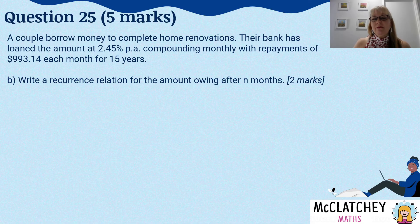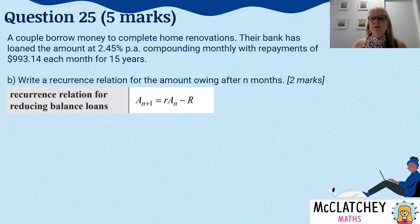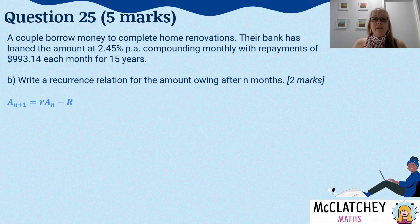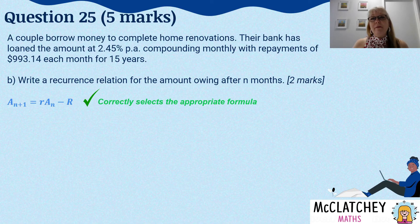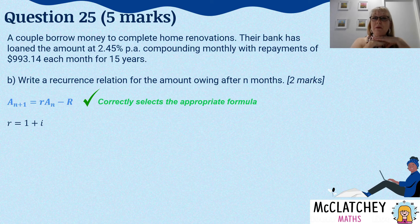Part B asks us to write a recurrence relation for the amount owing after N months. We pull the recurrence relation for a reducing balance loan off our formula sheet and write that down — that's our first mark for picking the right rule. An important skill to memorize: R = 1 + I. This comes up twice on this exam, so if you didn't get it the first time you probably won't get it this time either.